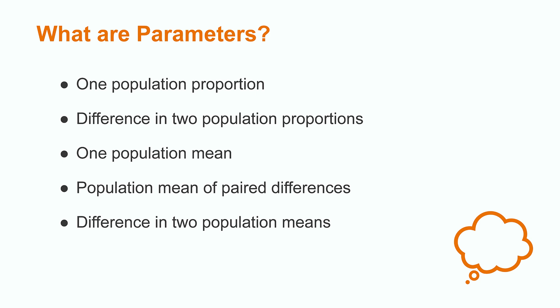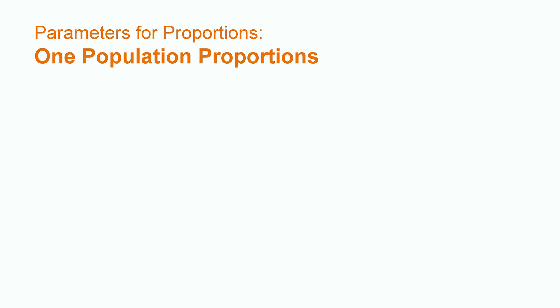The five parameters we will discuss today are one population proportion, difference in two population proportions, one population mean, population mean of paired differences, and difference in two population means. The five parameters we will be discussing today are either going to be in the form of proportions or means. We will begin by discussing proportions.